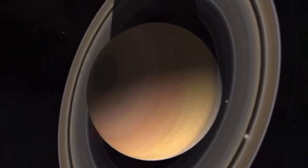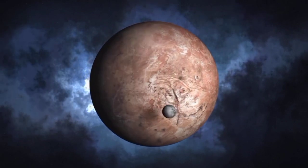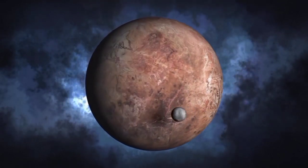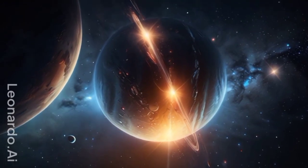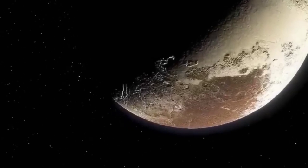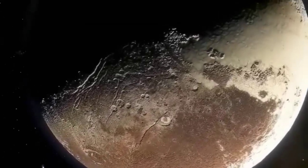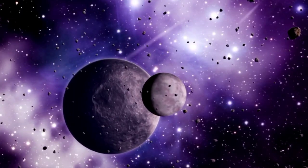One of the most fascinating aspects of Pluto's orbit is its intersection with Neptune's. For about 20 years in each orbit, Pluto actually moves closer to the Sun than Neptune, defying what we might expect from their positions in the solar system. This leads to a natural question: Why hasn't Pluto collided with Neptune?